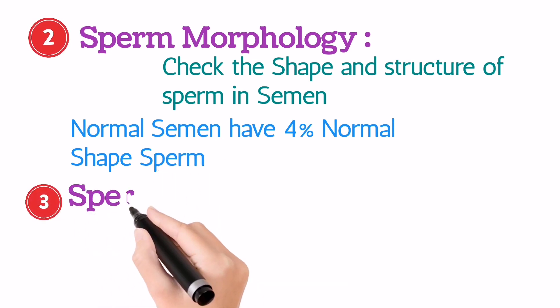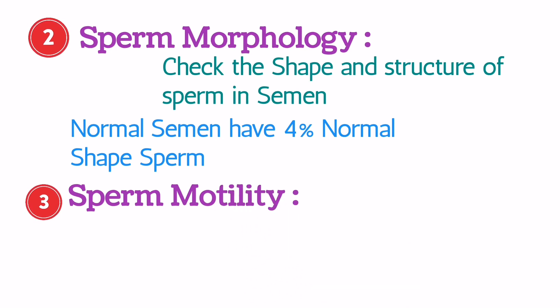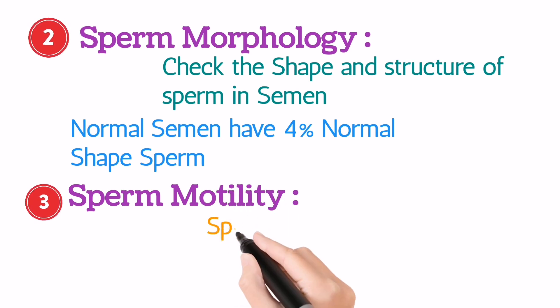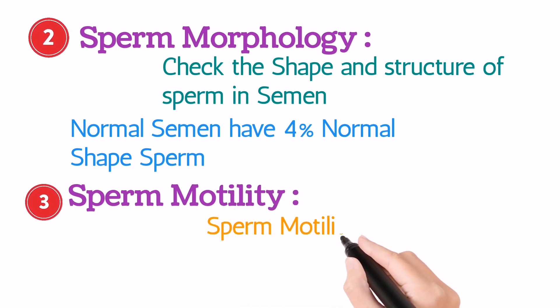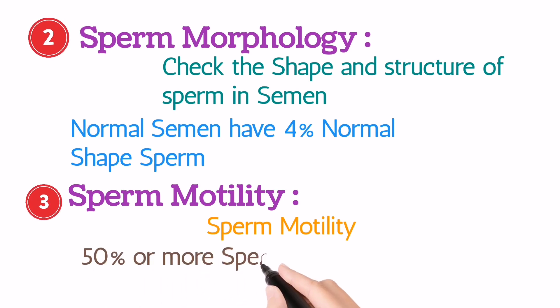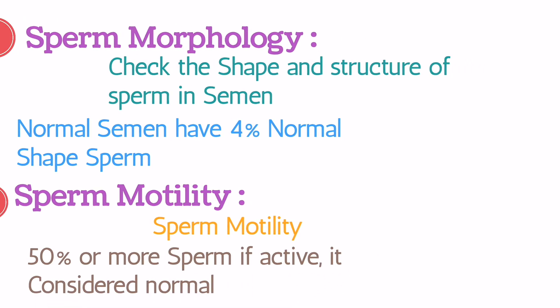Third, sperm motility. When you analyze semen, you should also check sperm motility. 50% or more than 50% motility is required for normal fertilization.